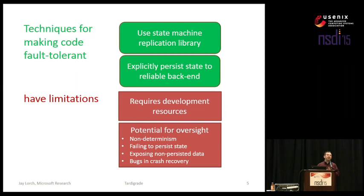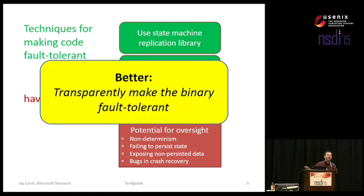You can fail to persist state that you didn't notice, or persist it too late after you've already exposed it to clients. You can make your state machine non-deterministic. You're going to have to do a lot of careful debugging to make sure that the service is actually fault-tolerant when the rubber hits the road. Who needs that? Let's just not invest any developer time, not risk introducing any bugs in fault-tolerance — let's just take the binaries and make them fault-tolerant.